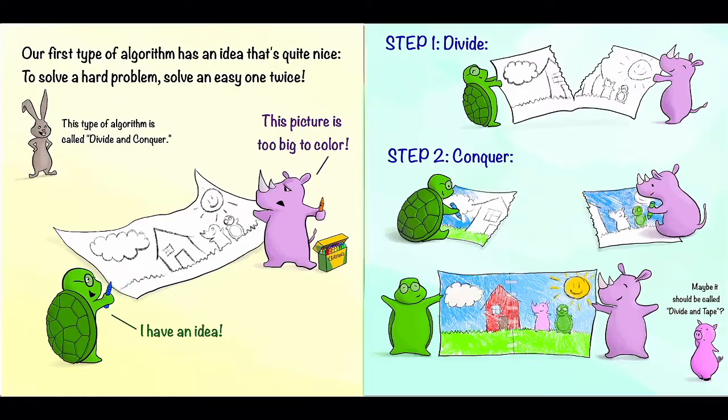Let's see an example. Here, Rhino notes that this picture is too big to color. And we have this big uncolored picture here. And Turtle says, I have an idea. Step one, divide. And they'll rip the picture in half. Step two, conquer. They each color their own halves and then put it back together. And now we have this beautifully colored picture. Although Pig wonders, maybe it should be called divide and tape.